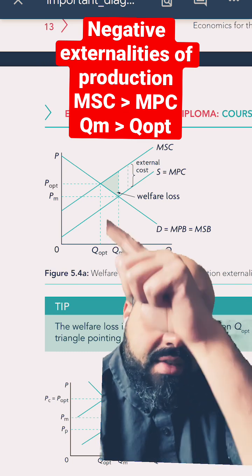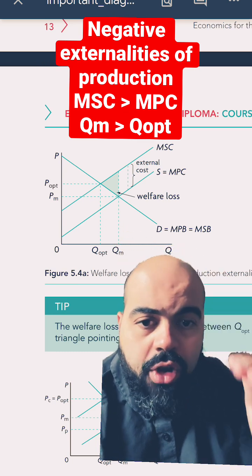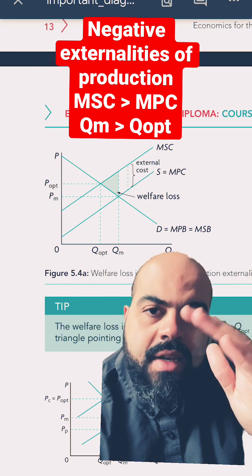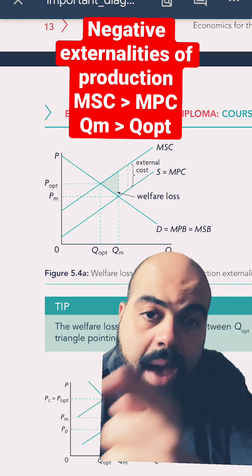So have a look at the diagram. The demand curve is the MPB, and it also aligns with the MSB. There is no externality on the consumption side, but the supply curve is the MPC.